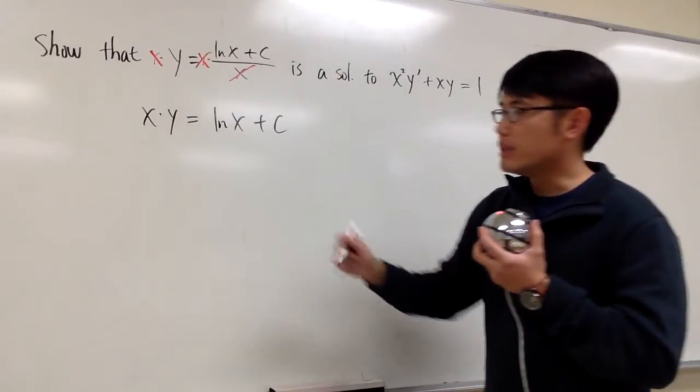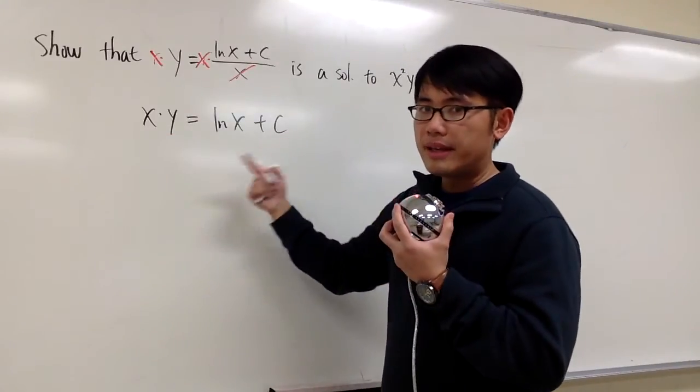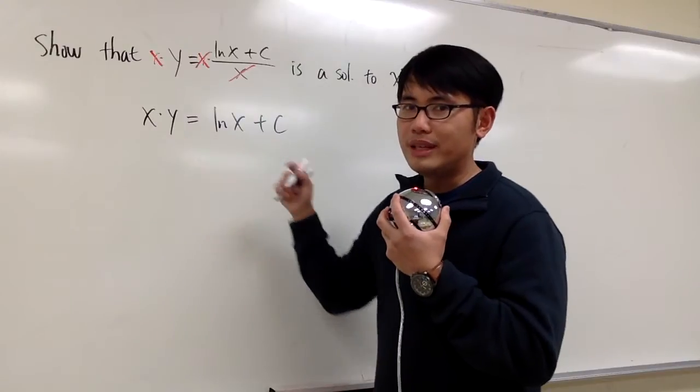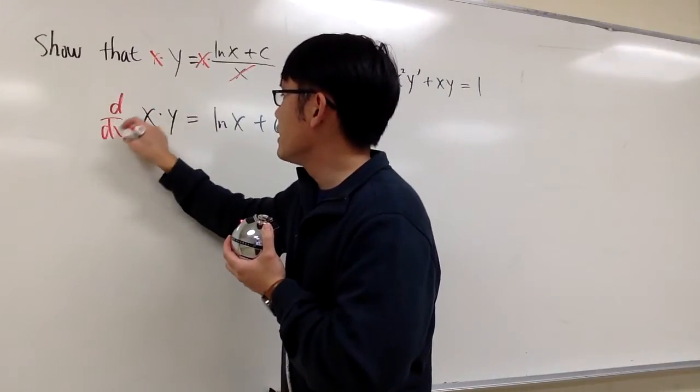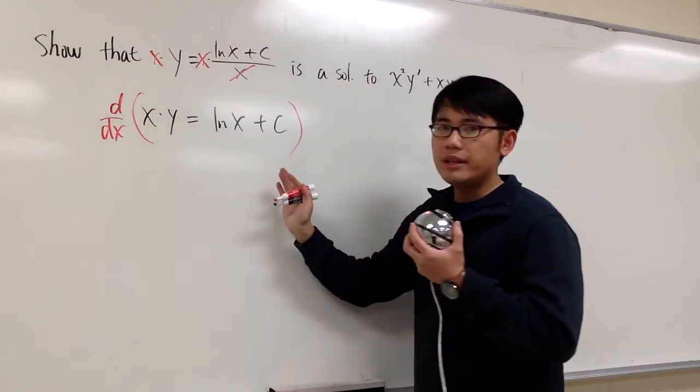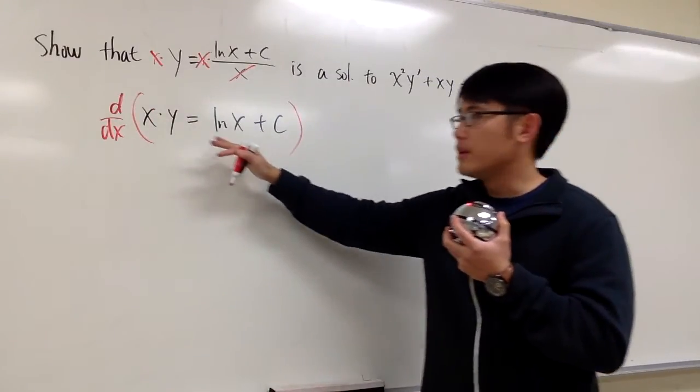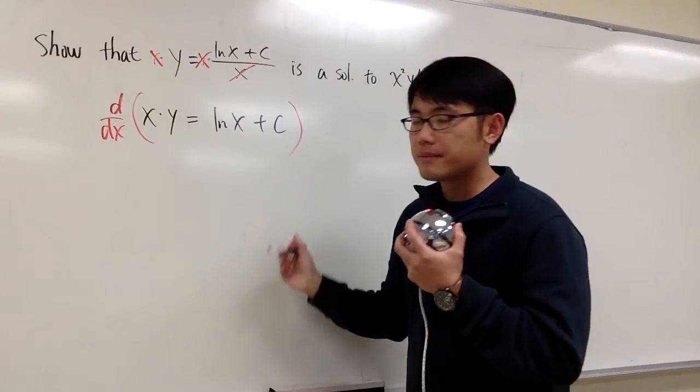And then what we can do is look at this equation, but then the y is not being isolated, so we can do implicit differentiation. So I will just put d dx across the equation to mean that we are taking the derivative of this equation implicitly.